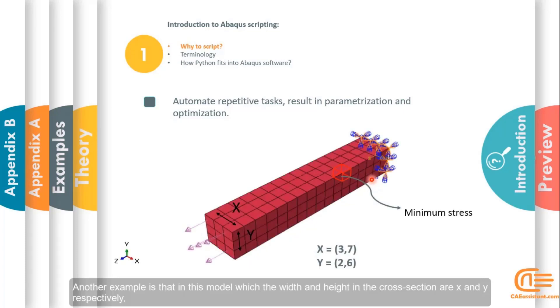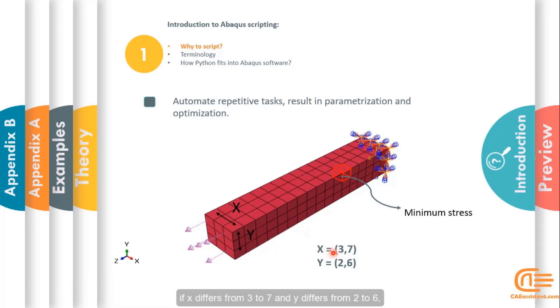Another example is that in this model, the width and height in the cross-section are x and y respectively. If x differs from 3 to 7 and y differs from 2 to 6, we can get stress values in a specified element by running simulation with different possible dimensions and finding the best cross-section dimensions that result in the smallest stress in that element.